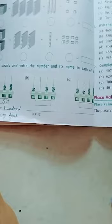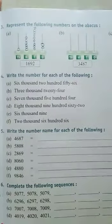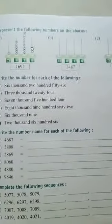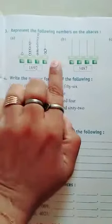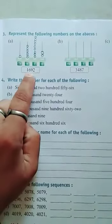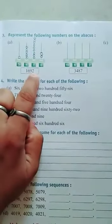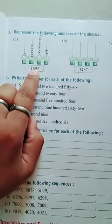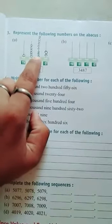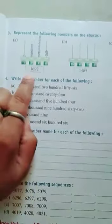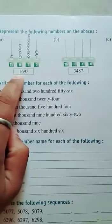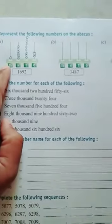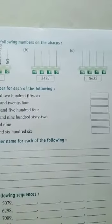Q3 is represent the following number on the abacus. In this you have to make beads. You are given an abacus, you have to make beads like for example you have 1692. In 1's place we have 2, so we made 2 beads, 2 circles. Then we have 9 in 10s place, so we made 9 beads on the 10s line. As it is, in 100s place you have 6, so you make 6 beads, and in 1000s place is 1, so you make 1. As it is, you do question B and C similarly.